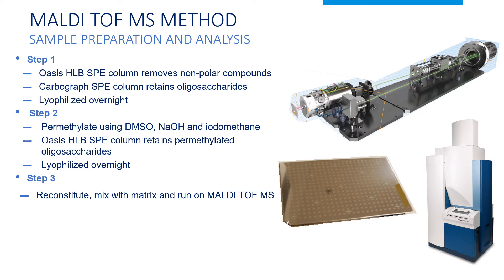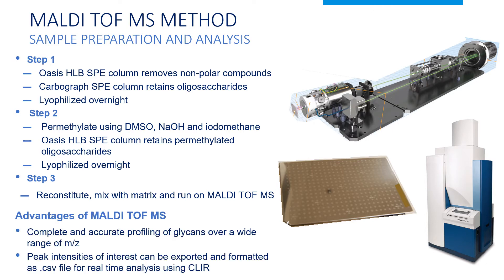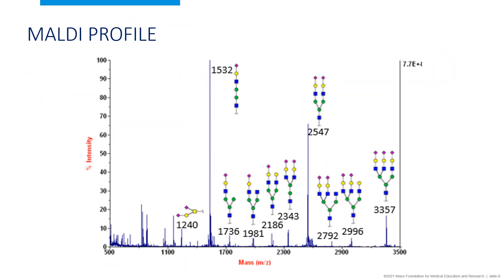The advantages of MALDI include complete and accurate profiling of glycans over a wide mass range, and the peak intensities of interest can be exported and formatted as a CSV file for analysis by our bioinformatics software. This MALDI profile, characteristic for galactosialidosis, shows several typically prominent peaks — the primary peaks at 1532 and 2547 — and similar peaks as identified.